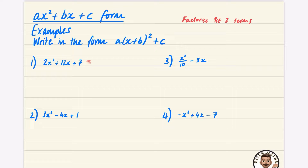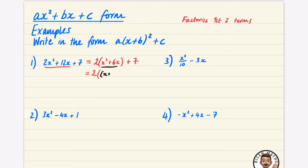Let's change it into a normal completing the square. Just focusing on these parts, I'm going to factorise out the two so that I have x squared plus 6x, and then at the end I'm just going to leave the plus 7. Now I'm going to complete the square on just this part in black: it's going to be (x + 3)² − 9. I'm going to close that bracket and do the plus 7.